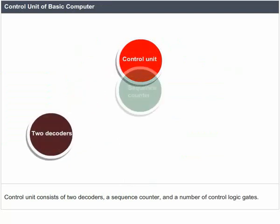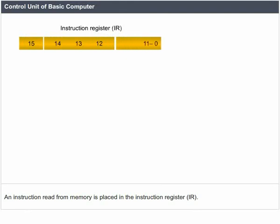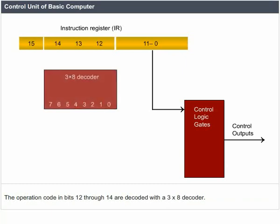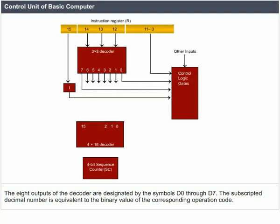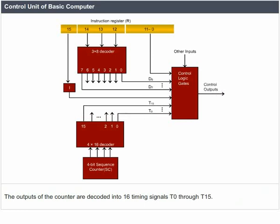The control unit of the basic computer consists of two decoders, a sequence counter, and a number of control logic gates. An instruction read from memory is placed in the instruction register IR, which is divided into three parts: the 1-bit, the operation code, and bits 0 through 11. The operation code in bits 12 through 14 is decoded with a 3-to-8 decoder. The 8 outputs are designated D0 through D7. The 4-bit sequence counter can count in binary from 0 through 15, producing timing signals T0 through T15. The sequence counter SC can be incremented or cleared synchronously.